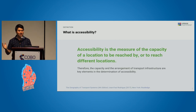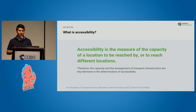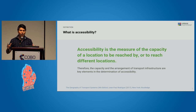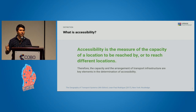So before I start, what is accessibility? Accessibility is the measure of the capacity of a location to be reached by or to reach different locations. It's not coverage per se in a spatial sense. Given a target set of resources or points of interest, how many of those in relation to the total available can I reach in the most efficient measure — in our case, measured by time.